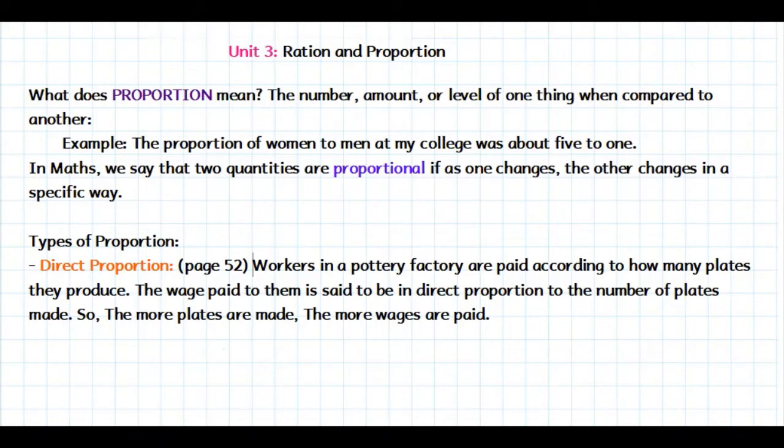Here it says, workers in a pottery factory are paid according to how many plates they produce. So, the more plates they produce, the more money they are going to receive. So, the wage paid to them is said to be in direct proportion to the number of plates made. So, the more plates are made, the more wages are paid.